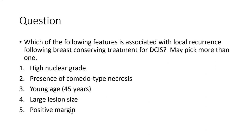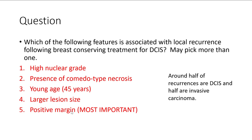Question: which features are associated with local recurrence following breast-conserving treatment for DCIS? Answer: all of the following — high nuclear grade, presence of comedonecrosis, young patient age less than 45 years, large lesional size, and a positive margin are all associated with increased risk of local recurrence. The most important among these is a positive margin.